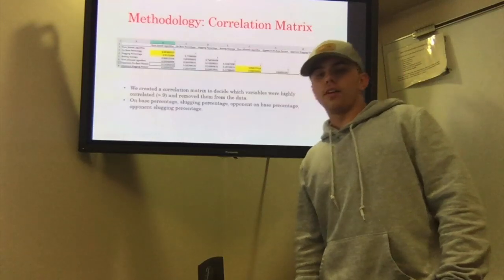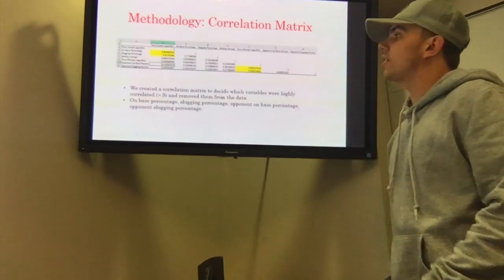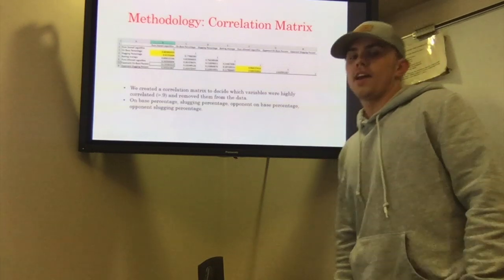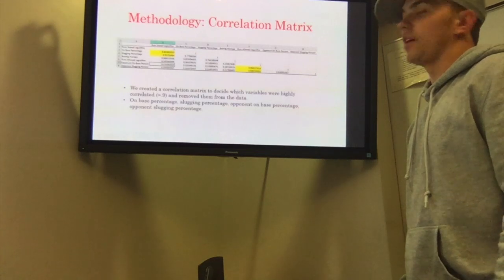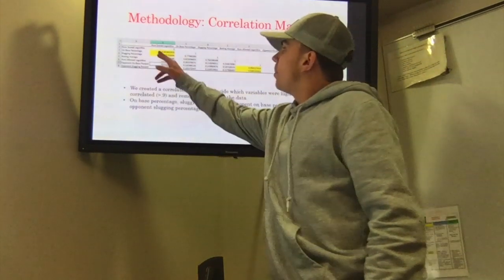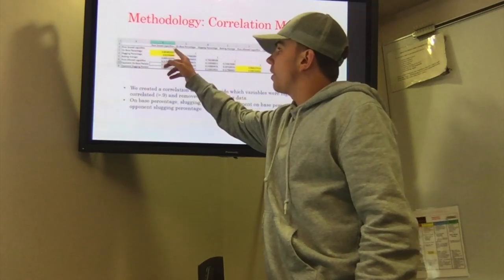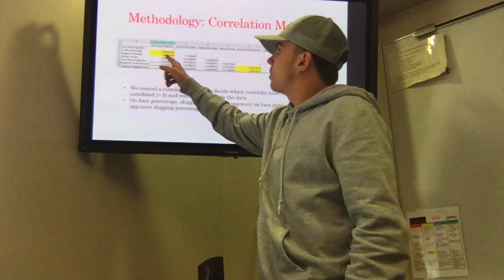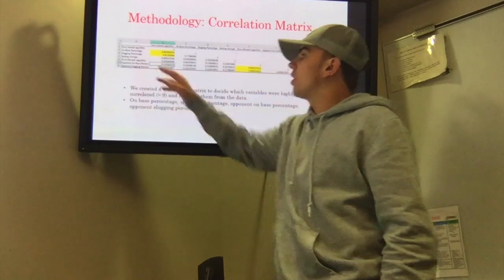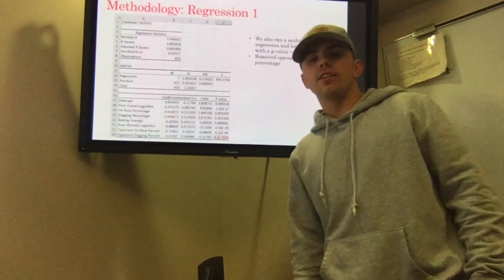Our first thing we did was do a correlation matrix, and here we were testing for multi-collinearity. We were deciding which variables were highly correlated and had a greater correlation than 0.9, and then we went ahead and removed these variables from our data. As you can see here, on base percentage was 0.89, that was pretty close to 0.9, so we decided to get rid of that. We also got rid of slugging percentage because it was 0.91, and then opponent on base percentage as well as opponent slugging percentage, as these were above 0.9 as well.